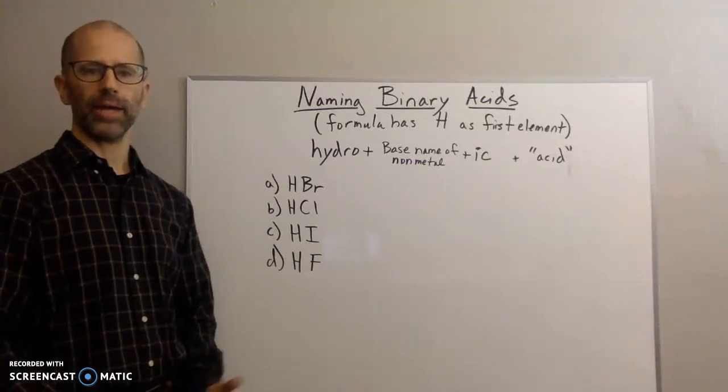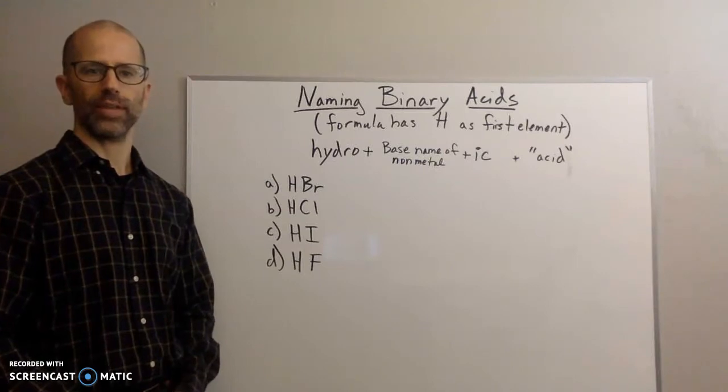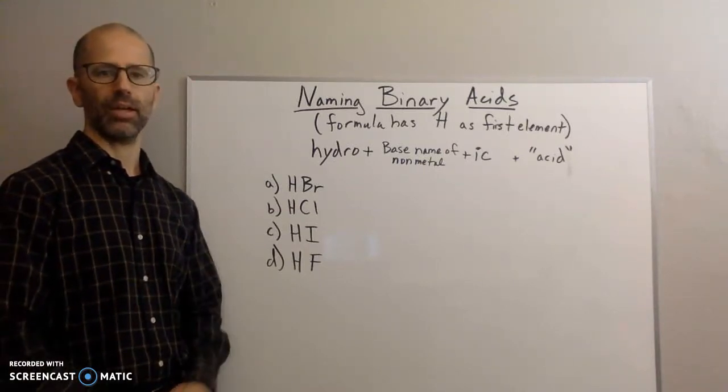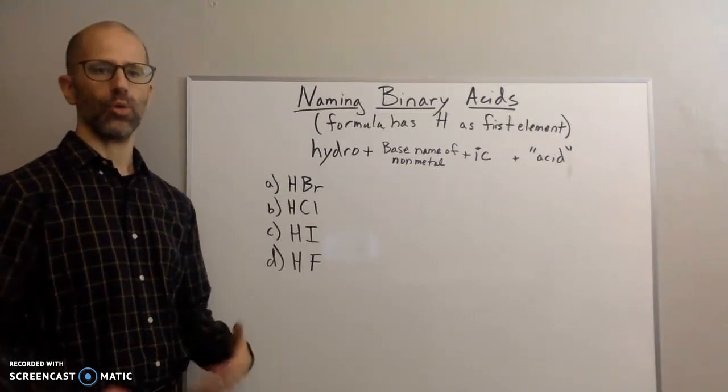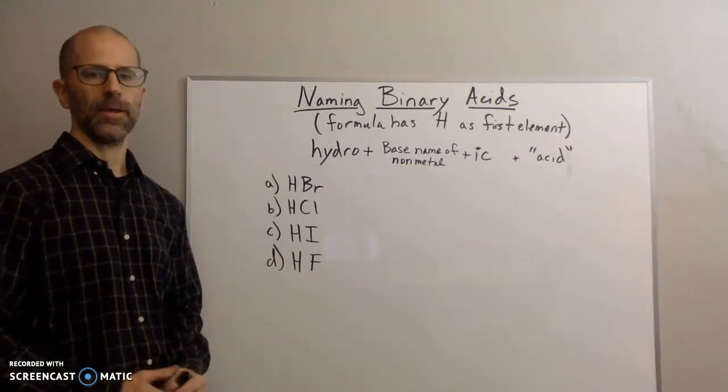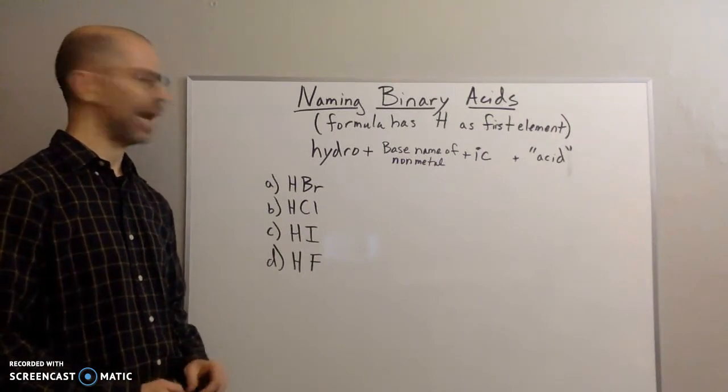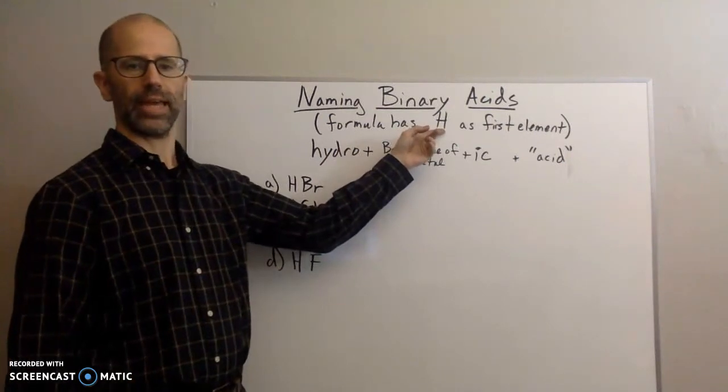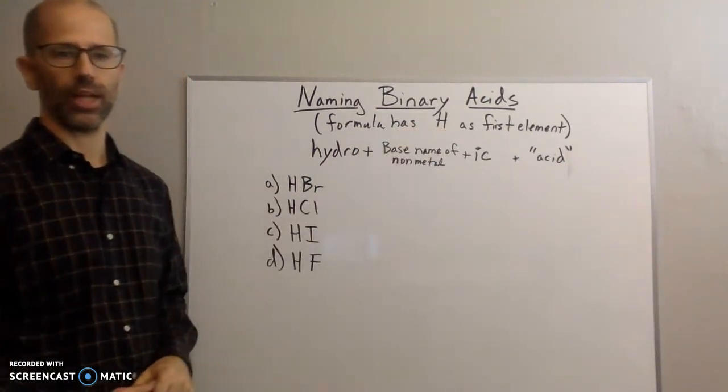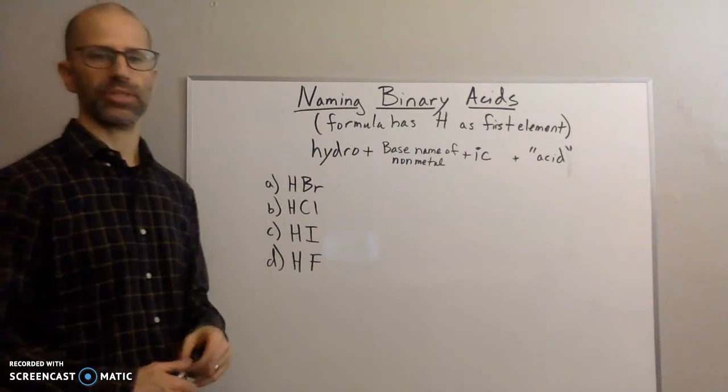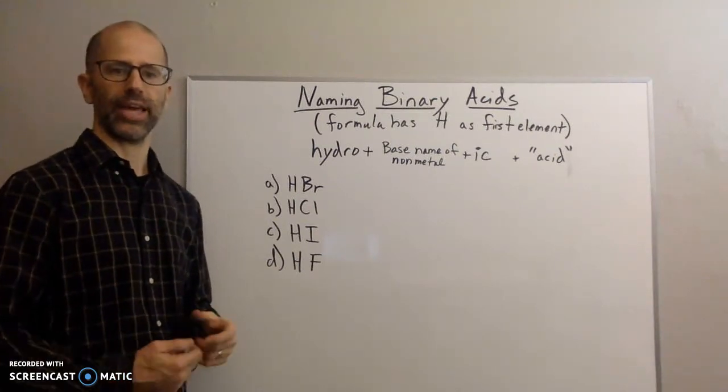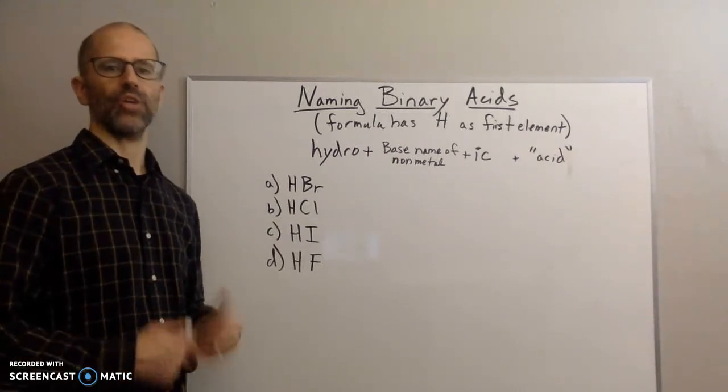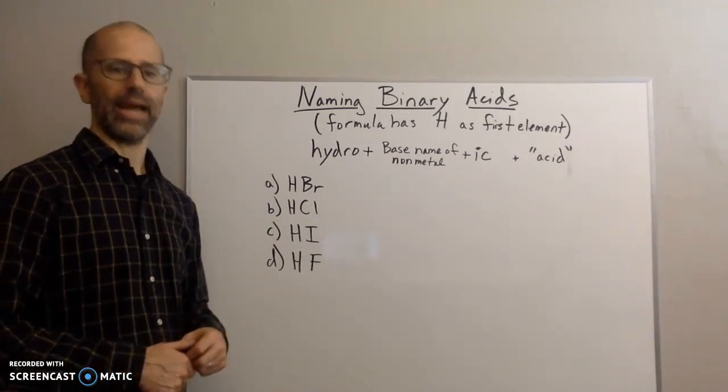Hello everyone, and welcome back. My name is Mr. Cobalt, and today I'm going to be going over the naming of binary acids. So we are getting into acids. The way you're going to identify an acid is that the formula begins with an H as the first element. So if you have a substance and the formula is written with the H first, that is a dead giveaway that you're working with an acid.